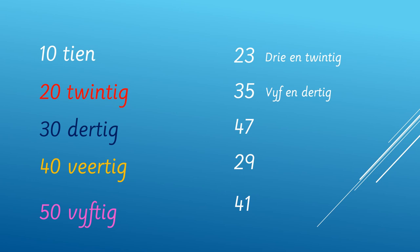Look at the next one — 47. The 7 is our unit. Sewe is 7 in Afrikaans, and 40 is veertig. So we start with the 7 and say sewe-en-veertig. Are you getting the hang of it? Okay, let's look at the next one: 29. What's the unit? 9, which is nege. We say nege-en-twintig. Alright, the last one — the unit is 1 and veertig, so it will be een-en-veertig.